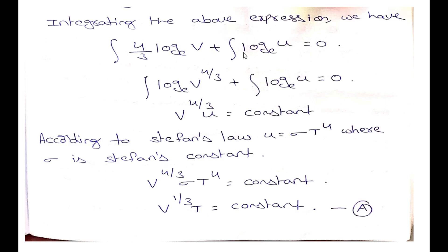Integrating on both sides, we get: log u plus 4 by 3 log V is equal to constant. According to Stefan's law, the energy density u is equal to sigma T to the power 4. Substituting u, we get sigma T^4 times V^(4/3) is equal to constant, and simplifying gives V^(1/3) times T is equal to constant.